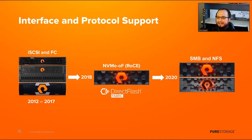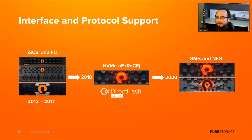So that brings us to today. A lot of the decisions we make at Pure are driven by customer feedback. One thing we are continually asked is customers want to put more on Pure — they love having their tier-one workloads, block workloads, hypervisors, and vVols on the FlashArray, but they want to also utilize the FlashArray for file workloads. So we're happy today to announce that with Purity 6.0, customers can enjoy the benefits of having SMB and NFS on their FlashArrays.